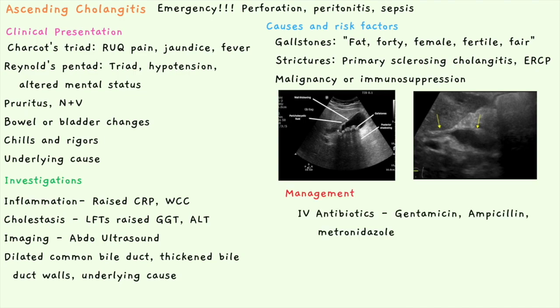Management: you want to treat the infection. This is an emergency so you can't wait for cultures and sensitivities, so you start empirical IV antibiotics. IV is used because it works fastest, putting medication directly into the bloodstream. Gentamicin covers gram-negatives, ampicillin covers gram-positives, and metronidazole covers anaerobes or GI organisms that may translocate.